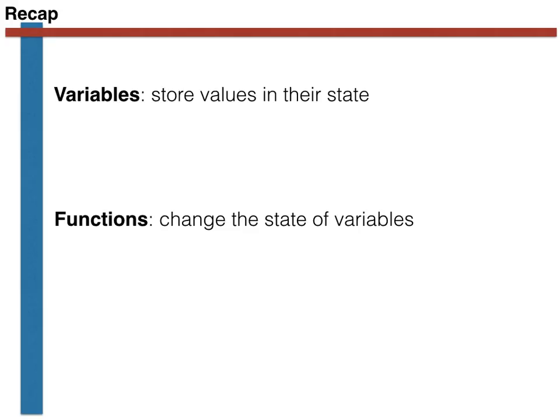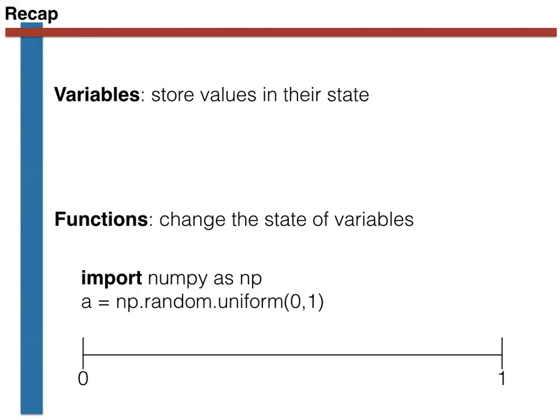We then learnt that functions are used to change the state of these variables. In the last exercise, we introduced a function that will prove particularly useful in the context of this course on Stochastic Processes and Risk, namely a function for generating uniform random variables that lie between 0 and 1.